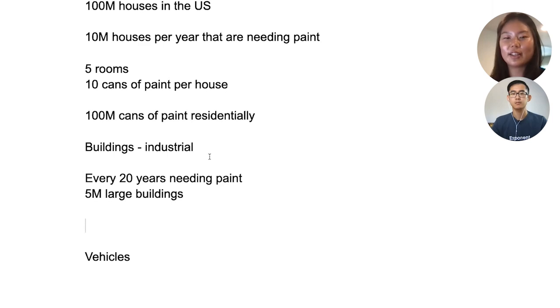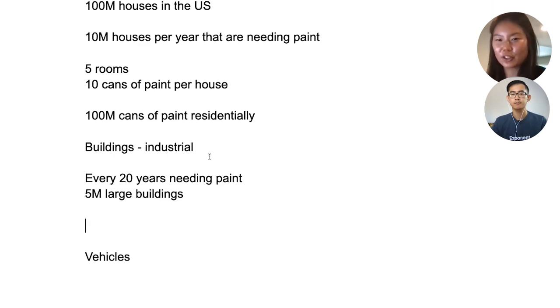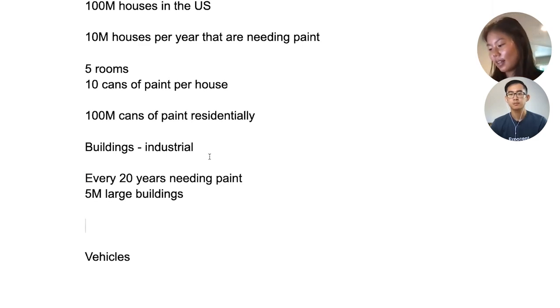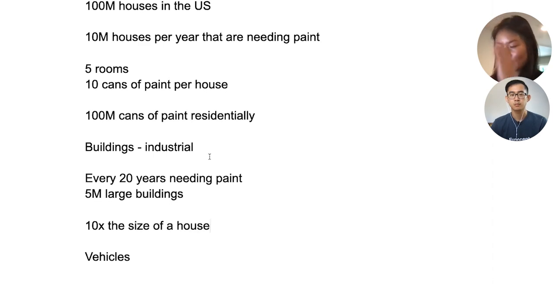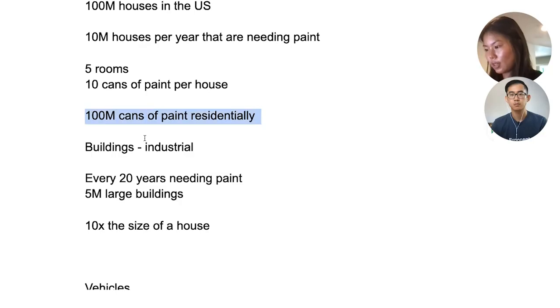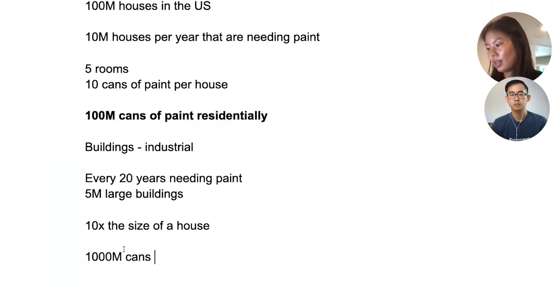I'm picturing downtown Mountain View where I am, or downtown Livermore where I grew up. They're not skyscrapers, but they're sizable buildings with multiple stories. We could divide by geographies — New York versus a suburb — but for now, let's assume these buildings are about 10x the size of a house. So that gives us roughly 1 billion cans of paint for industrial buildings.